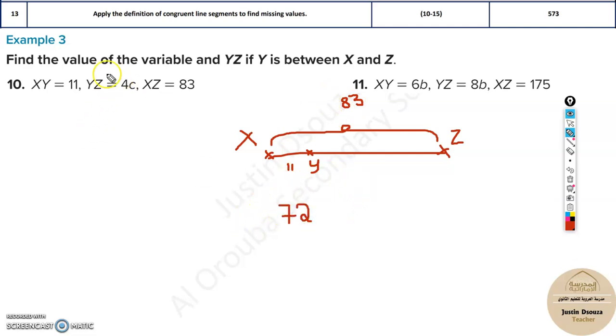But the catch is, you need to find the variable as well. They have told YZ is mentioned as 4 times c. So what is this 72 equal to? It is 4 times c. Now all you need to do is divide 72 by 4, and that will be equal to c. So that c would be 20 minus 2, that's 18 would be the value of c.